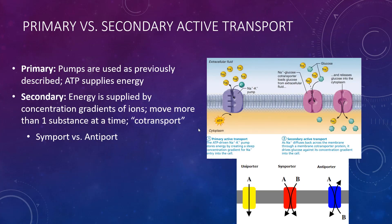Now we have active transport. Primary active transport, as described in the previous lecture, consists of ion pumps. These pumps pump ions across the cell membrane against their concentration gradient — moving things from a low concentration to a high concentration, in other words going uphill. That's hard to do, so it's going to require energy. Adenosine triphosphate (ATP) is the energy source that fuels ion pumps. In this example, it's using ATP to move sodium and potassium ions across — this is the classic sodium-potassium pump.